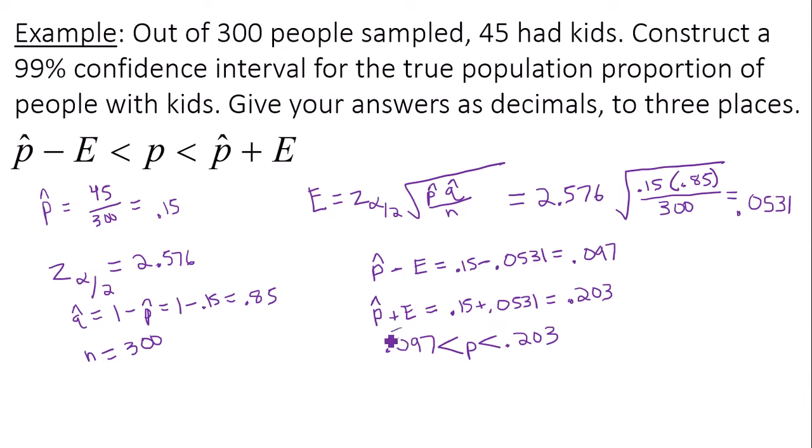And what this is telling me is that the true proportion of people with kids is somewhere between 0.097 and 0.203, or somewhere between about 9.7% and 20.3%. That is the true population proportion of people that have kids.